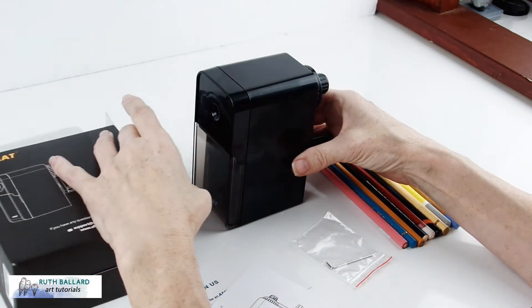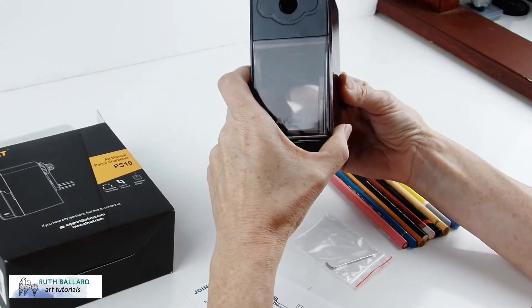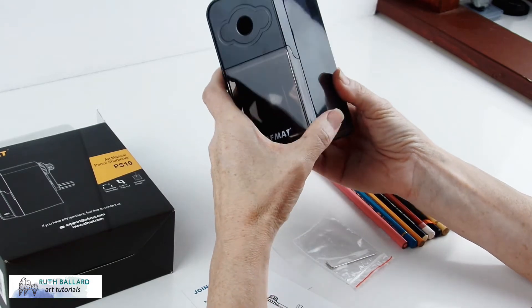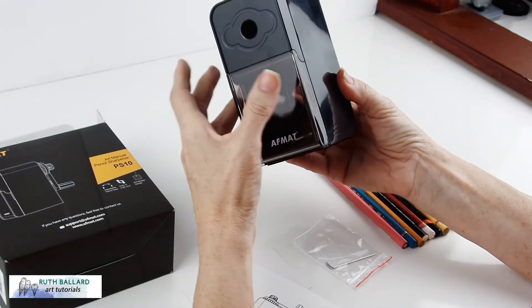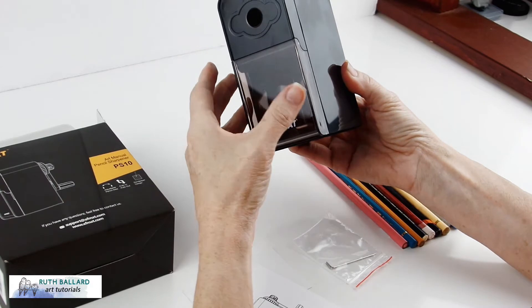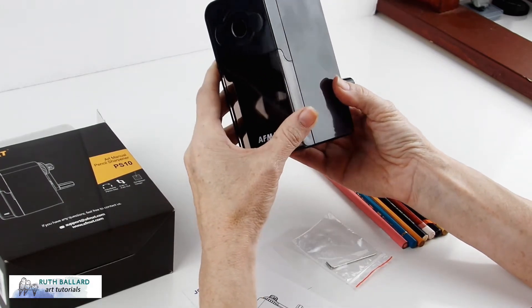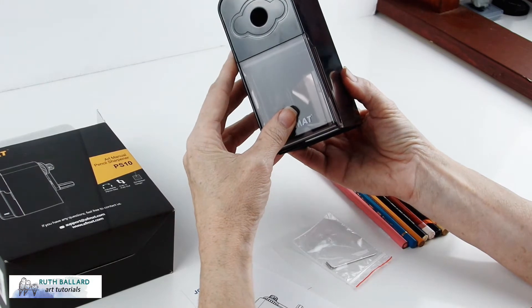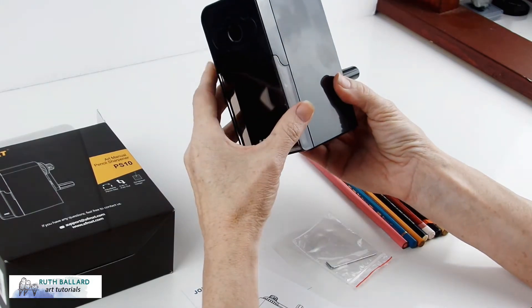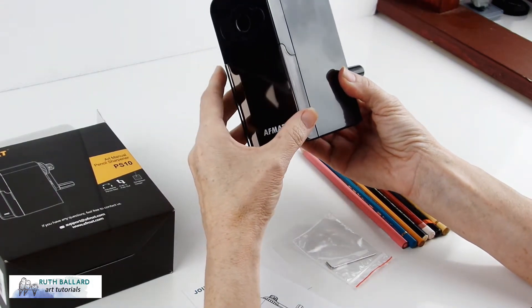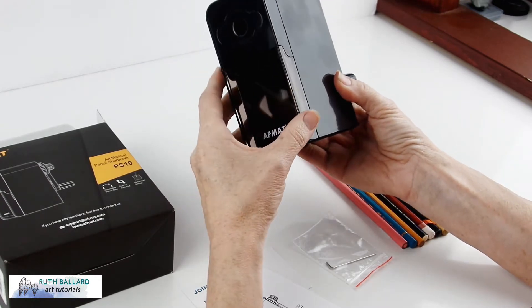According to the website, this sharpener is great for graphite, watercolor, charcoal, colored pencils with soft leads, and they mention specific brands such as Prismacolor, Derwent, Staedtler, and the Conte a Paris 8 millimeter pencils. That's a pretty thick pencil.